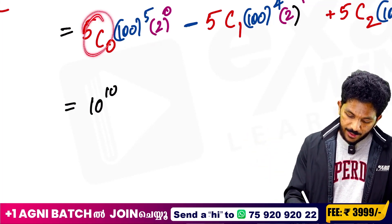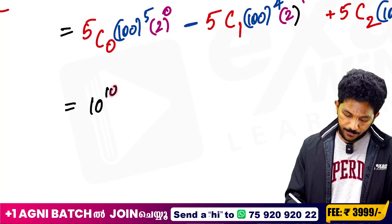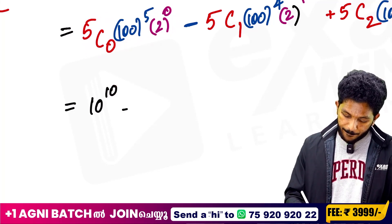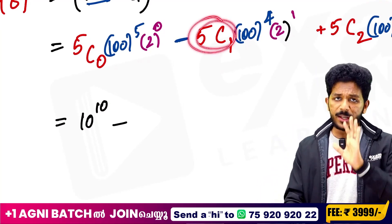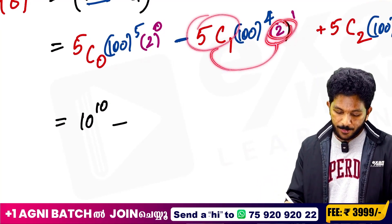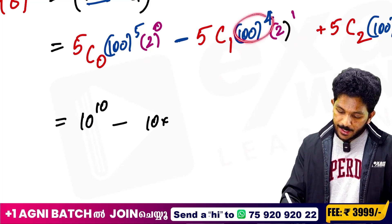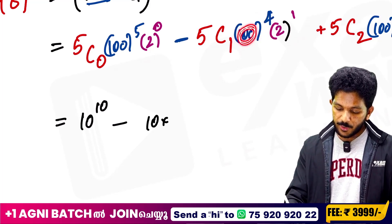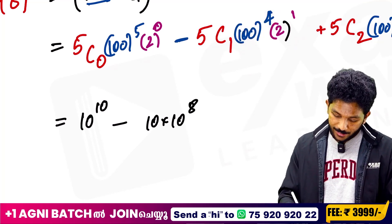2 to the power of 0 is 1. This is 1. This is 10. Minus: 5C1 is 5. If we multiply it by 10, then 10 squared raised to 4 gives 10 raised to 8.